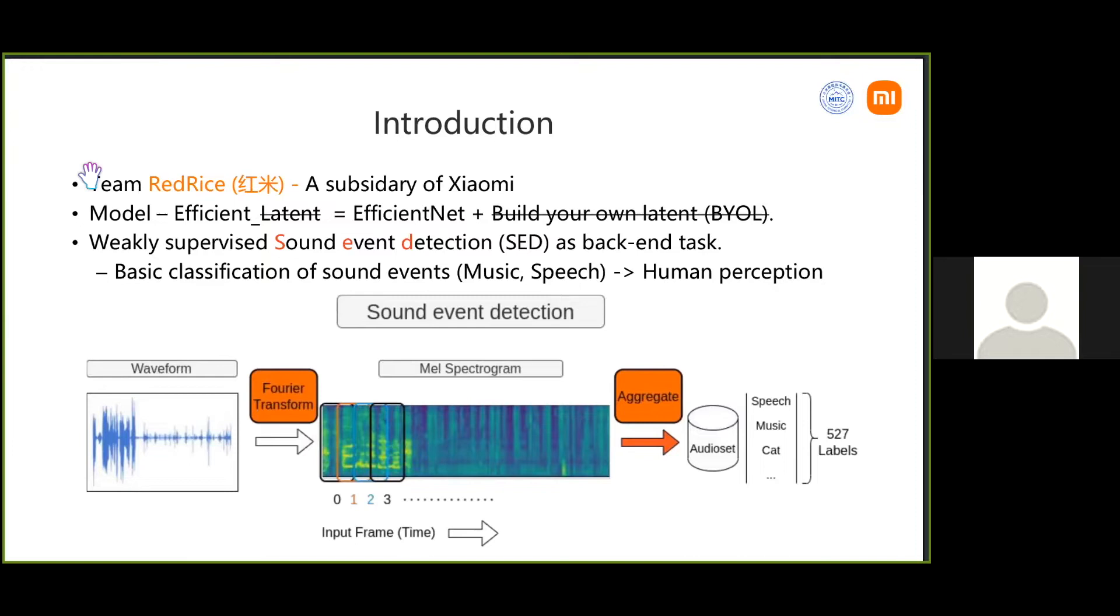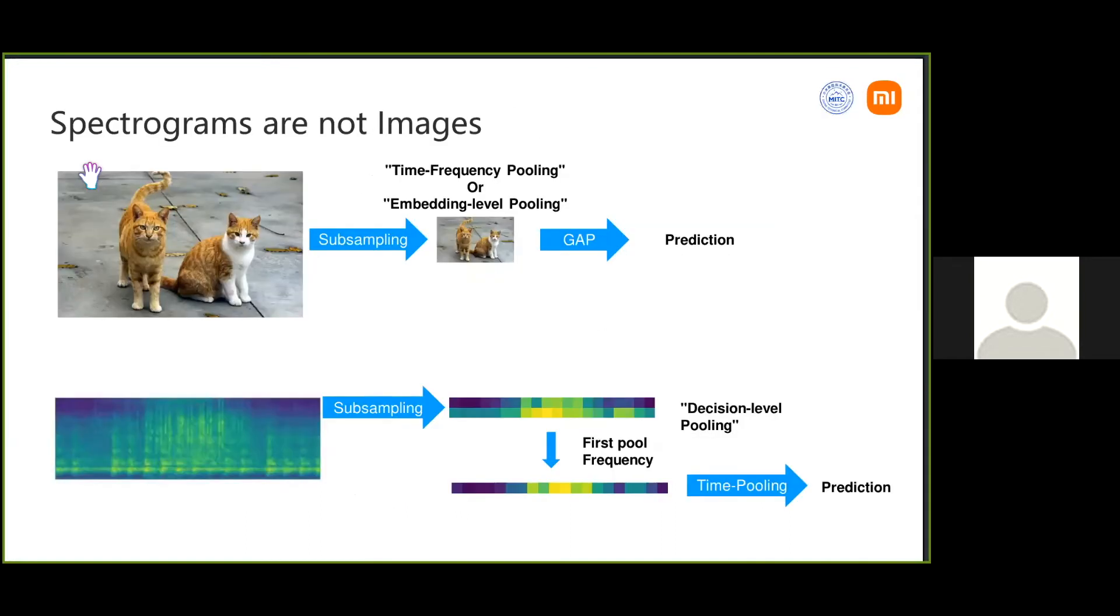This is the main framework. What we see here is a simplified architecture: we take a waveform, do a Fourier transform, then a bit of filtering to get a mel spectrogram, and then aggregate this mel spectrogram during training on AudioSet. Clips are weakly labeled and we get a prediction for some of the 527 labels. My model is therefore trained in a supervised way, not self-supervised.